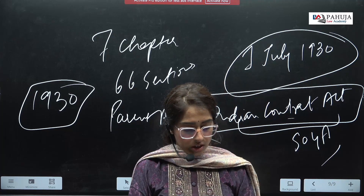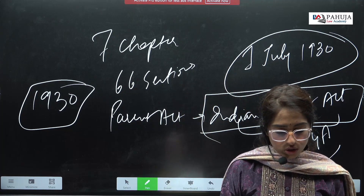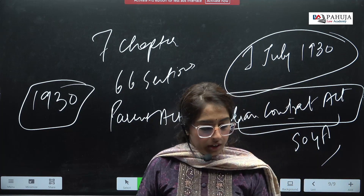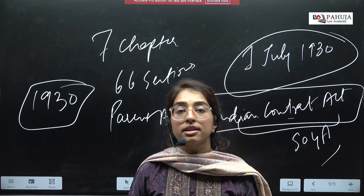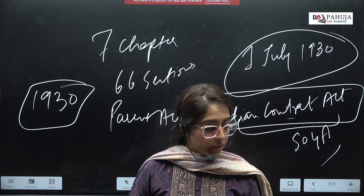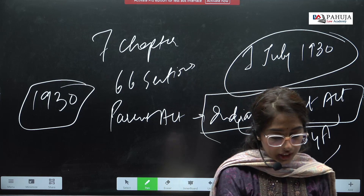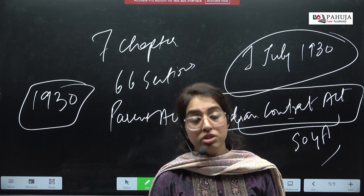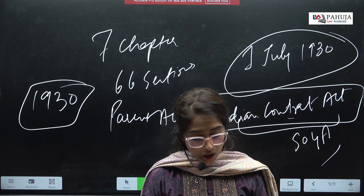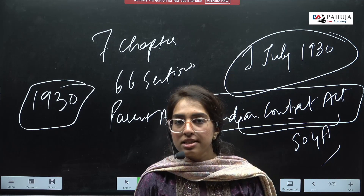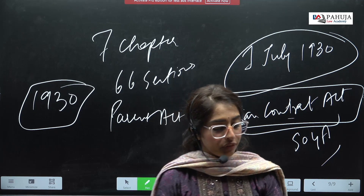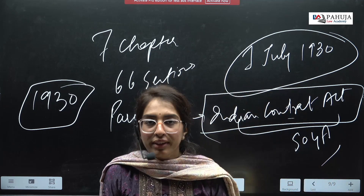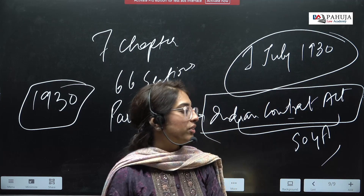Then in 1930, SOGA was made a separate Act and the SOGA-related provisions were removed from the Contract Act. This was the very basic about SOGA. Please do share and subscribe to the video, and mention in the comments if you want more lectures on SOGA to be updated. We will definitely get back with more videos. Thank you everyone, have a nice day.